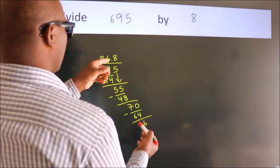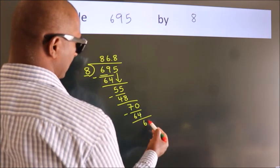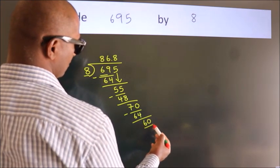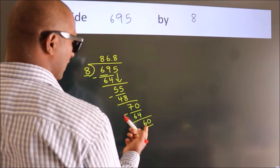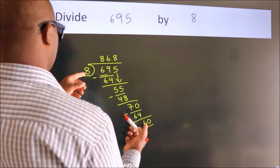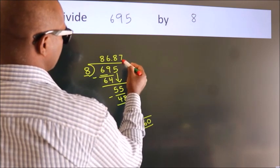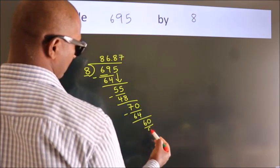we already have the decimal, so directly take 0, so 60. A number close to 60 in the 8 table is 8 times 7 equals 56.